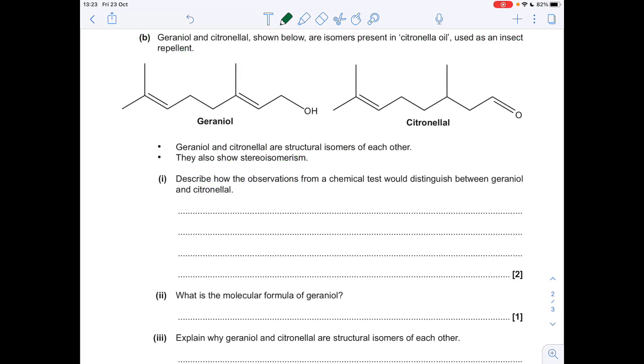Part B now, we've got to describe how the observations from a chemical test would distinguish between geranial and citronellal. So we've got to identify functional groups. Well, you can see they're both alkene. They've got an alkene group in them. So we couldn't use the bromine water test because they would both decolorize it. This is a primary alcohol, whereas this is an aldehyde. So if we added Tollens reagent to both, only the aldehyde, only citronellal would generate the silver mirror. You'll see I've given the alternative name there for Tollens reagent, ammoniacal silver nitrate.